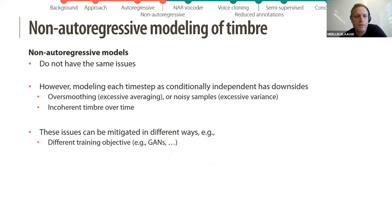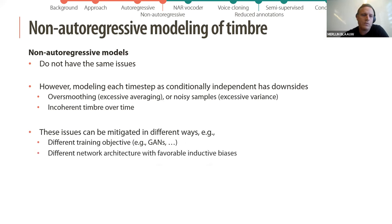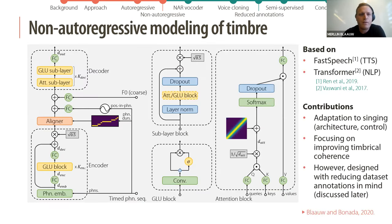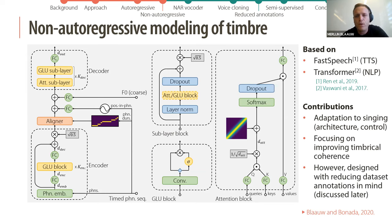These issues can be mitigated in different ways: using a different training objective such as a GAN to reduce over-smoothing, or finding a network architecture with favorable inductive biases. The approach we investigate here is a non-autoregressive model based on FastSpeech for text-to-speech, which itself is based on the Transformer network for NLP. Contributions include adaptation to singing with a different architecture and control signals, and a focus on improving temporal coherence.